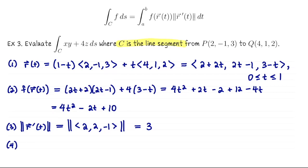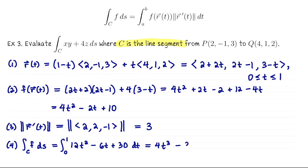Now we can evaluate the integral. We integrate from 0 to 1 of 3 times (4t² − 2t + 10) dt, which is the integral of 12t² − 6t + 30 dt. Anti-differentiating gives 4t³ − 3t² + 30t, evaluated from 0 to 1. So that's 4 minus 3 plus 30, which equals 31. That's our last example for this lesson. Once you start doing these they're not so bad: come up with your parametrization, plug it into your function, compute the speed, and integrate.